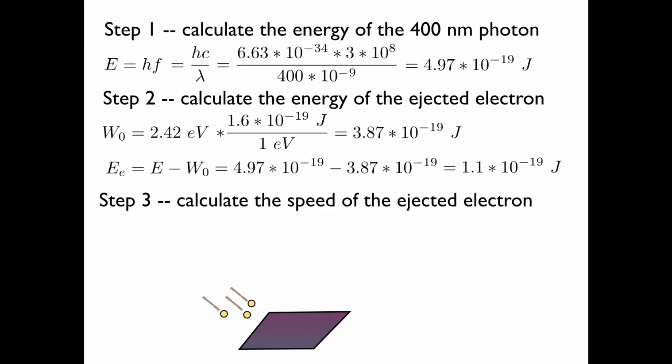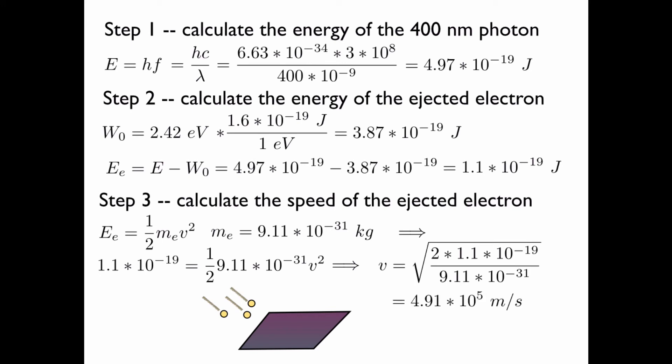Now let's use this to find the speed of the ejected electron. We simply equate its energy to the formula for kinetic energy. We can look up the value for the mass of the electron. It's pretty small. In units of kilograms, it looks like a very small number. And then we plug in everything that we know and we rearrange to solve for V. So multiply both sides by 2, divide by the mass of the electron, and take the square root. This gives us a speed of 4.91 times 10 to the 5 meters per second.